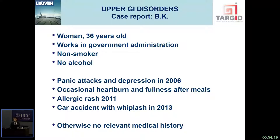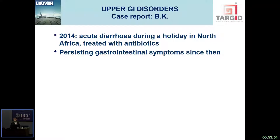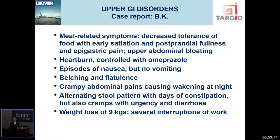We'll start with a clinical observation. A 36-year-old woman, works in government administration, non-smoker, no alcohol, history of panic attacks and depression, occasional heartburn and fullness after meals. She'd been on a PPI intermittently, had an allergic rash in 2011, and a car accident with whiplash in 2013. But then in 2014, she went on holiday in North Africa, had acute diarrhea for which she received antibiotics, and since then nothing has been the same. She has meal-related symptoms with early satiation, postprandial fullness, epigastric pain, upper abdominal bloating, heartburn controlled with omeprazole, episodes of nausea but never vomiting, belching and flatulence, crampy abdominal pains waking her at night, alternating constipation and diarrhea with urgency. She lost about nine kilos and stopped work several times for consecutive days.